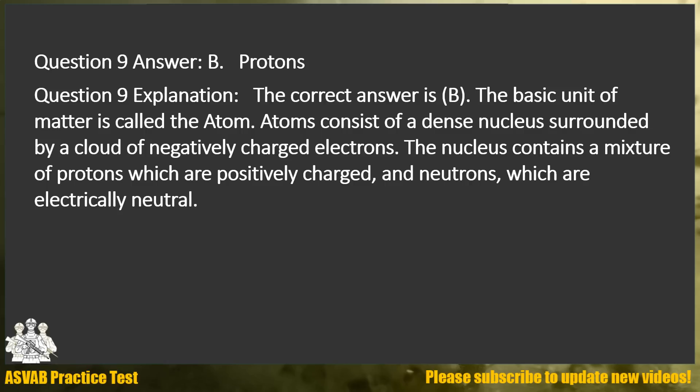Answer: B. Protons. Explanation: The correct answer is B. The basic unit of matter is called the atom. Atoms consist of a dense nucleus surrounded by a cloud of negatively charged electrons. The nucleus contains a mixture of protons, which are positively charged, and neutrons, which are electrically neutral.